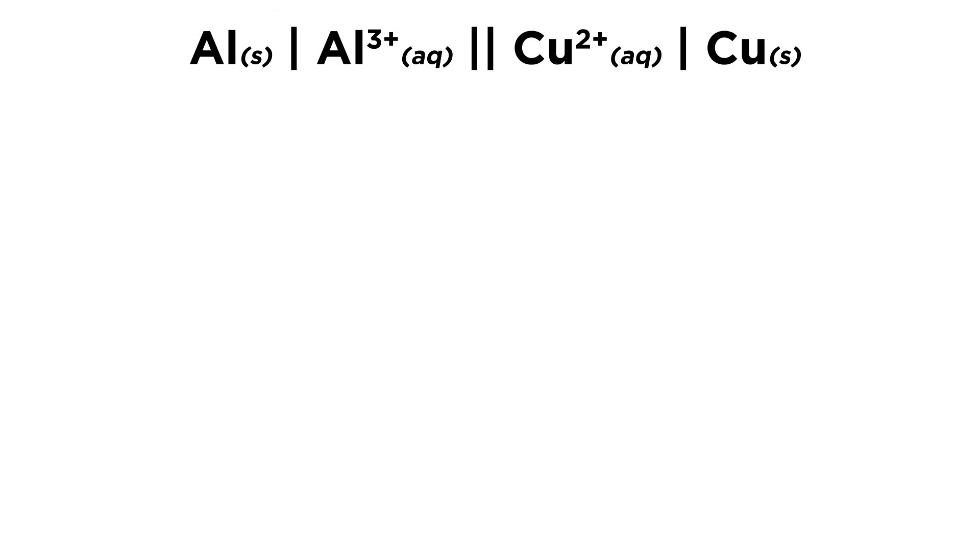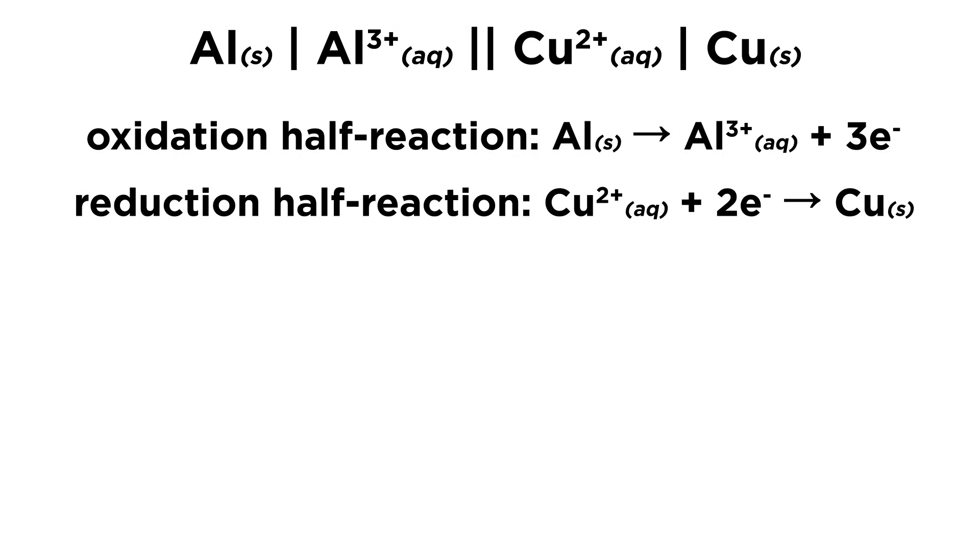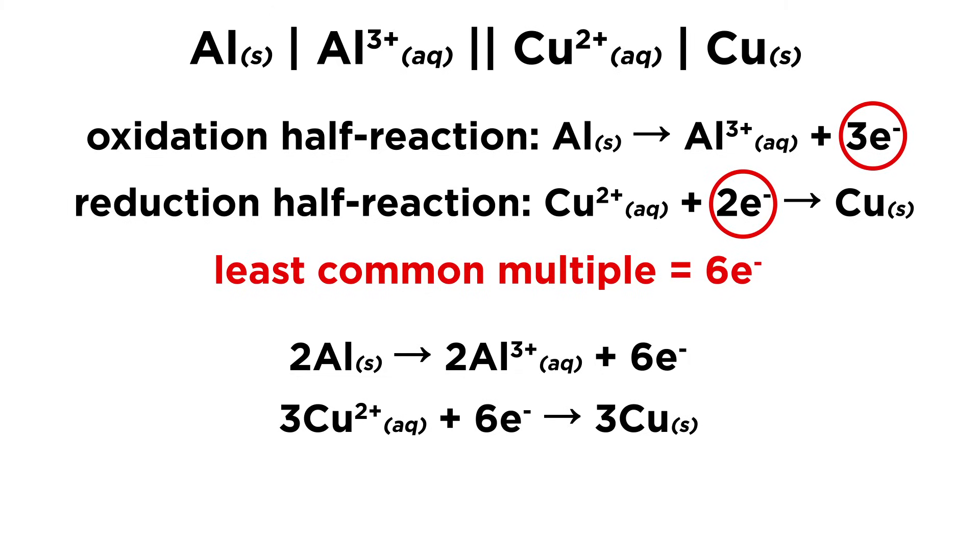We can go between this electrochemical notation and the balanced cell reaction by just including the number of electrons involved in each half-reaction. Then use the least common multiple of electrons to combine the half-reactions into the cell reaction, and electrons will cancel.